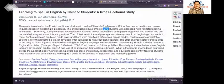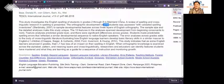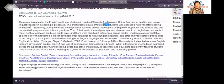The next one is learning to spell in English by Chinese students, a cross-sectional study published in a scientific journal written by four researchers. The study investigates the English spelling of students in grade two through eight in mainland China. So a review of spelling across linguistic research in spelling is presented.